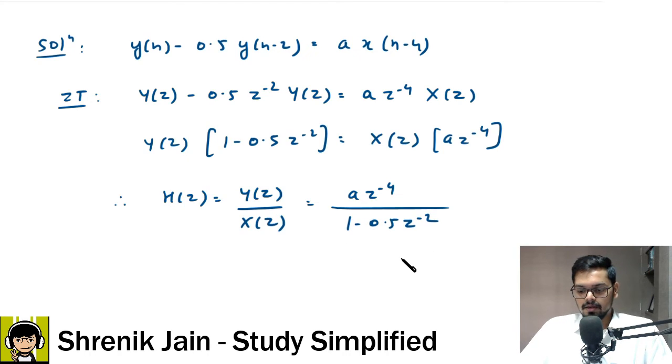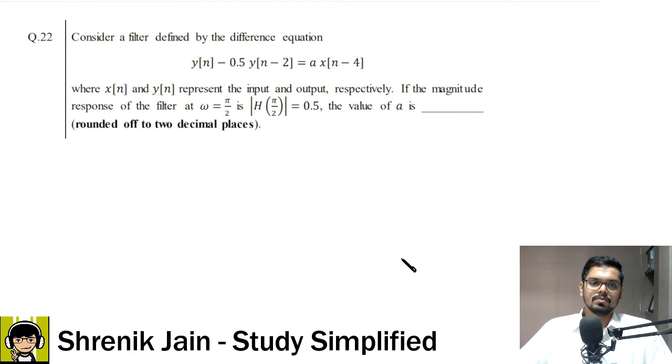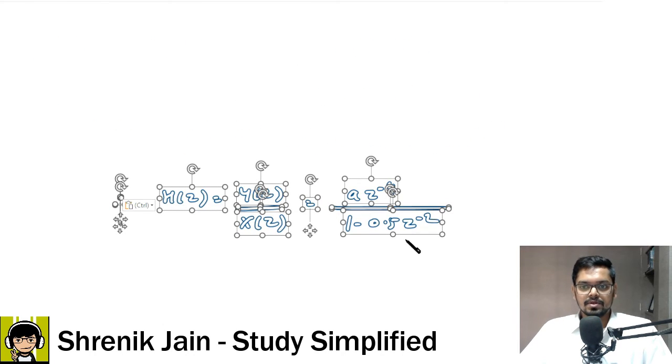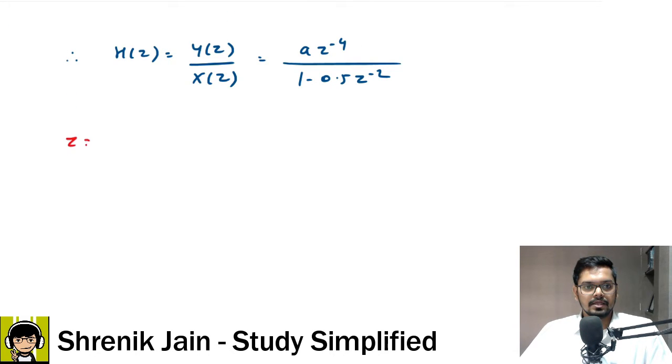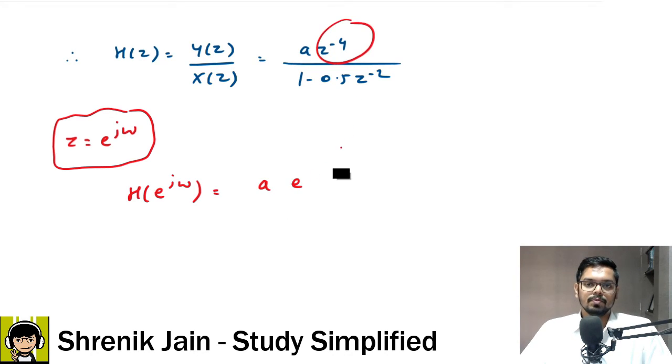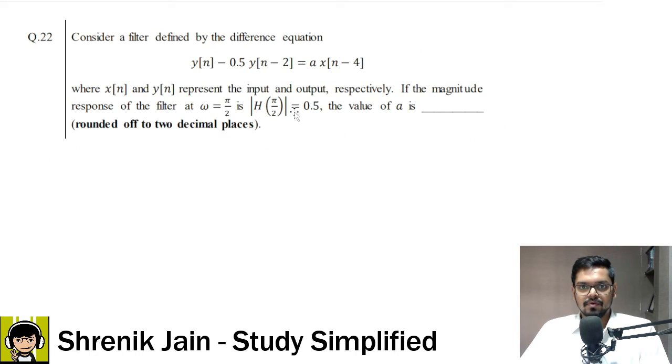So, Y of Z can be taken common from the left hand side. This is what is left inside the bracket and in the right hand side we have X of Z and in the bracket we have a into z to the power minus 4. Therefore, I can say my H of Z, the transfer function is Y of Z by X of Z which is equal to a z to the power minus 4 divided by 1 minus 0.5 z to the power minus 2. Now, remember that here omega is used. So, DTFT concept is used. So, what we will do now? What we will do now is we will replace z with e to the power j omega.